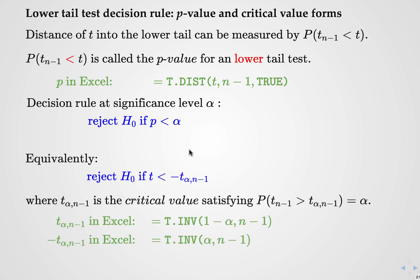We can also use a decision rule based on a critical value. The critical value is essentially the same kind of thing as for the upper-tail test, except now because we're looking in the lower tail of the distribution, two things change. We have a less-than for looking in the lower tail, and because the values of the t-distribution down there are negative, we have a negative sign on our critical value. The t-alpha, n-minus-1 critical value is the same number as before — but you need to put a minus sign in front of it for the lower-tail test.